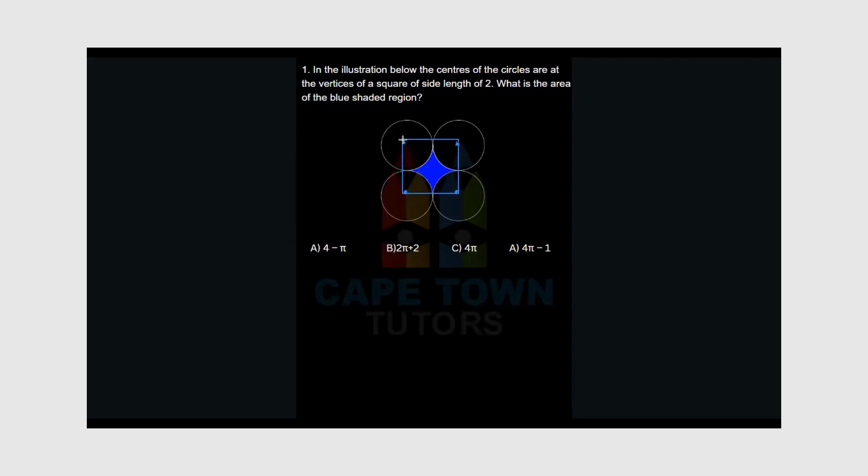So this is the square that you got over here. Now it says that this square has a side length of 2. So it has a side length of 2. Now if it has a side length of 2, that would mean that you have 1 here and you have 1 here. So which means that the radiuses of all these circles is 1.